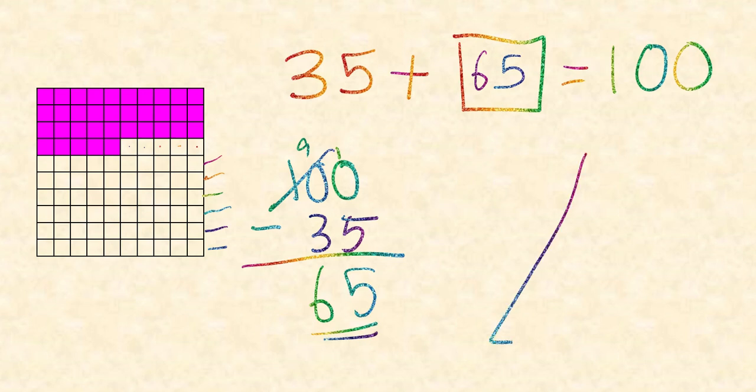Same thing here. 100, 35, 65. 35 plus 65 is 100. 65 plus 35 is 100. 100 minus 35 is 65. 100 minus 65 is 35. It all goes back to the same thing. It's actually very simple.